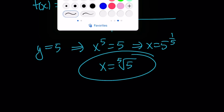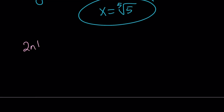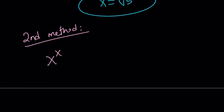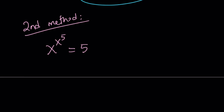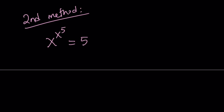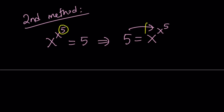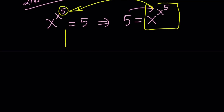Let's look at the second method. I'll also show a graph at the end which reinforces the result — not a proof, but a visual. The second method is different. We have this equation, and one thing to notice is we can switch sides and write 5 as x to the power x to the power of 5. Since 5 equals this, I want to replace the 5 in the exponent with this expression.